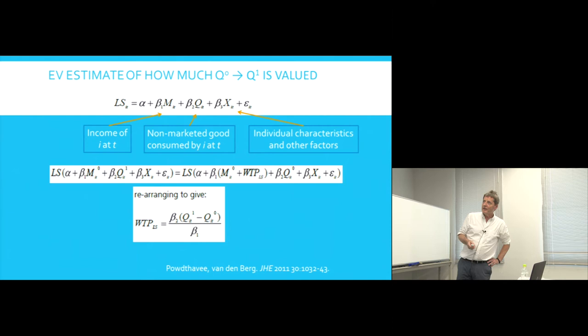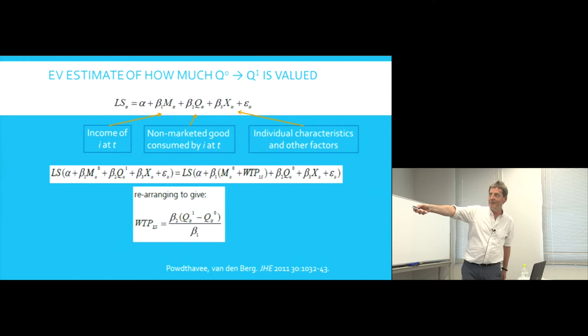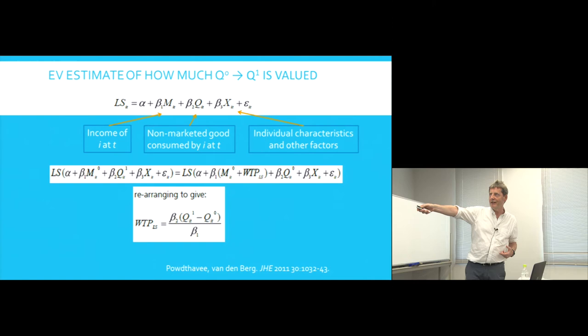The final equation in this lecture: life satisfaction (LS) is the dependent variable, depending on a constant, income (M), some non-marketed good Q — which in our case could be something to do with your health — and individual characteristics, plus an error term. So life satisfaction is explained basically by income, the non-market health-related good of interest, and individual characteristics.